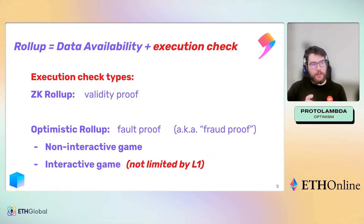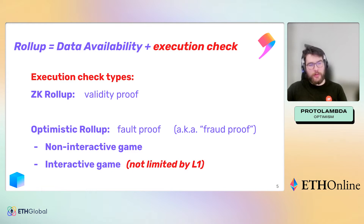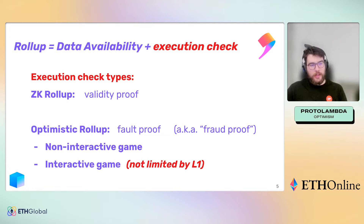A rollup is really just this combination of data availability and an execution check - the thing that secures withdrawals going back from layer two to layer one. We have various different types of execution checks, also called validity proofs or fault proofs or previously fraud proofs. If the sequencer makes a mistake or is malicious, they might post the wrong output - a state that's not actually valid - and then you have to prove them wrong on layer one. ZK rollups have validity proofs where you prove with cryptographic technology that the rollup performed a certain state transition given layer one inputs. Optimistic rollups defer the proof, and only when there's contention do you play this interactive game on layer one to prove or disprove the outputs.